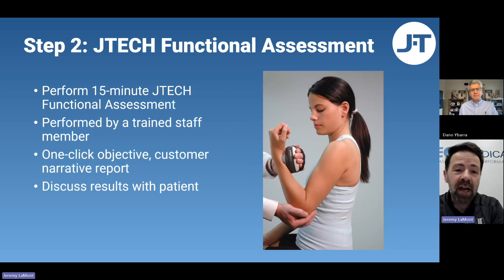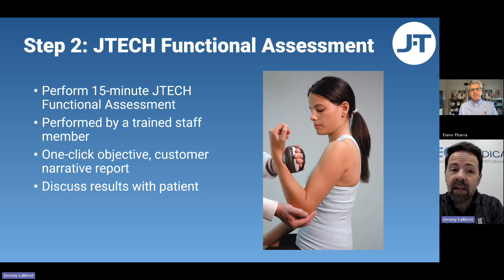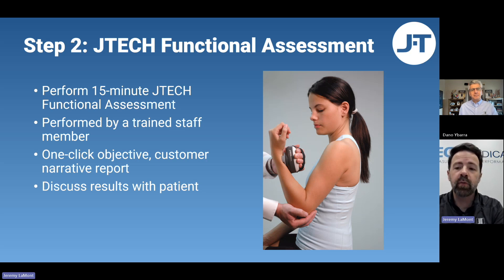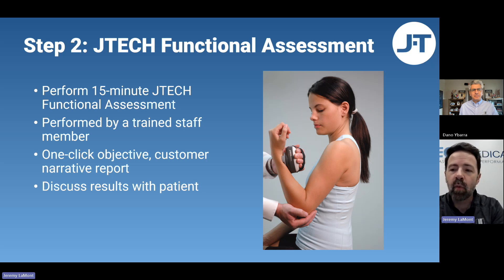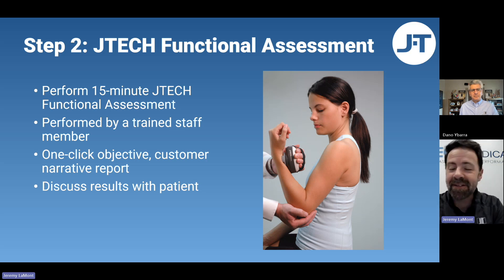Step two is performing an objective evaluation. This is where you take concerns identified visually and manually and put some numbers to them. The JTEC functional assessment typically takes under 15 minutes and is usually performed by staff, so it doesn't necessarily need to take up your time. When the tests are complete, you create an objective, narrative, custom report with one click from our system. This is a critical component of our proven system to increase PVA. With that report in hand, you as the doctor can meet with your patient to discuss findings, the treatment program, and the goals established in step one. You can also submit this report to the insurance company, and it will radically reduce the number of denials.